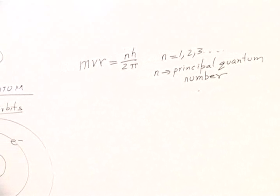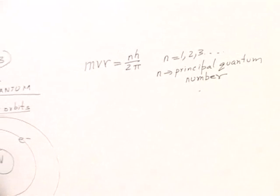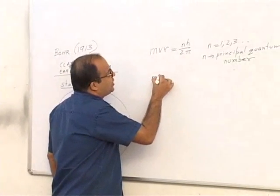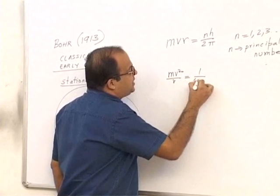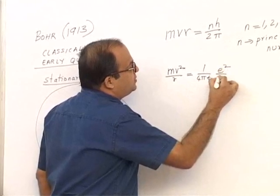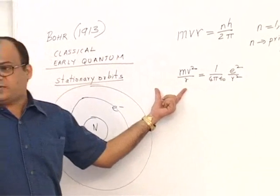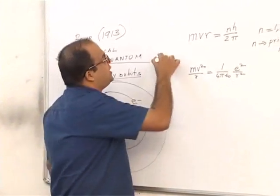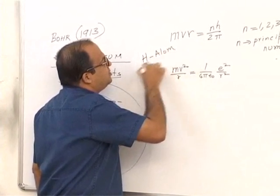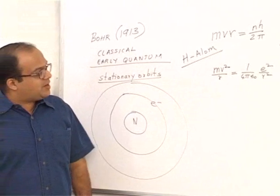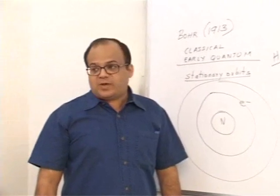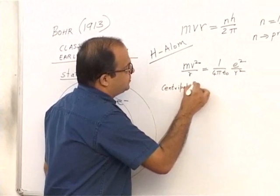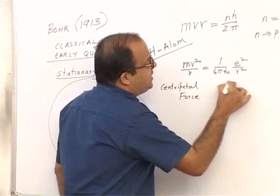The second equation states that the electrostatic force of attraction between the electron and the nucleus provides the necessary centripetal force. The centripetal force is given by mv²/r, and this equals (1/4πε₀)(e²/r²). This is the electrostatic force of attraction between the electron and the nucleus — we are talking only about the hydrogen atom for the time being.